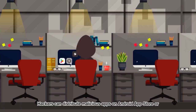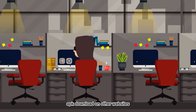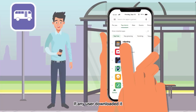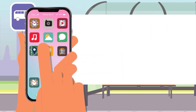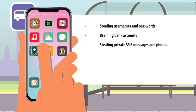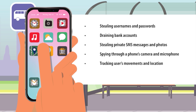Hackers can distribute malicious apps on the Android App Store or APK downloads on other websites. If any user downloads one, it might impact the legitimate apps on the same device. The consequences include: stealing usernames and passwords, draining bank accounts, stealing private SMS messages and photos, spying through a phone's camera and microphone, tracking the user's movements and location, and accessing the user's contact list and phone logs.